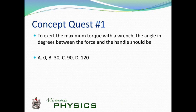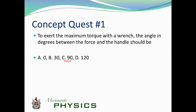Concept question: to exert the maximum torque with a wrench, what angle in degrees between the force and the lever arm should you use? With F·d·sin θ, you want to get the maximum perpendicular component of the force to the lever arm. So 90 degrees gives you maximum torque. Sine of 90 is 1, so the torque just becomes F times d — that's the maximum torque you can get for any given force.